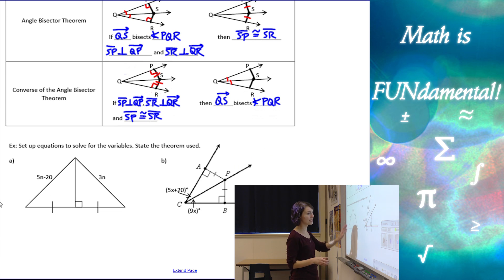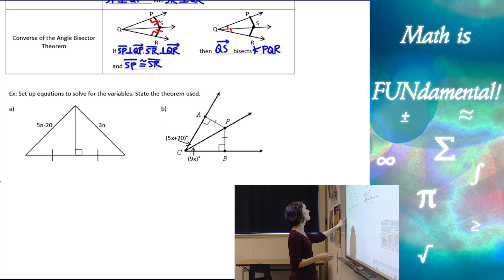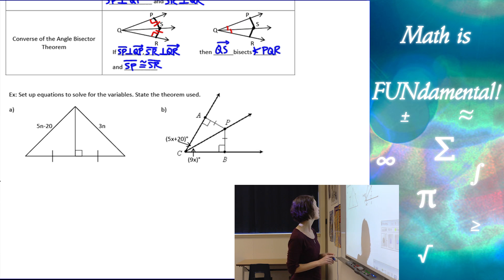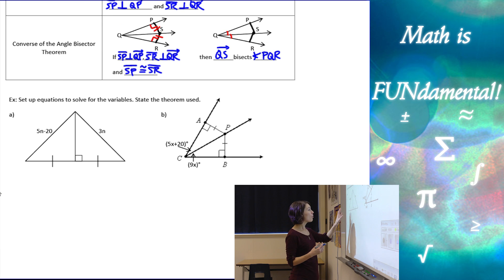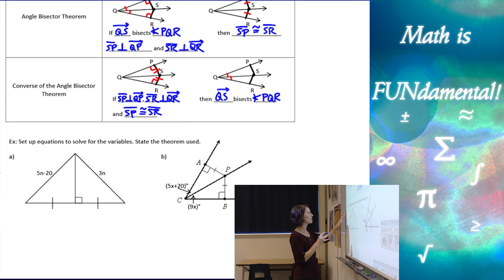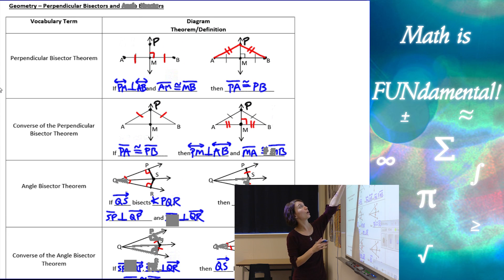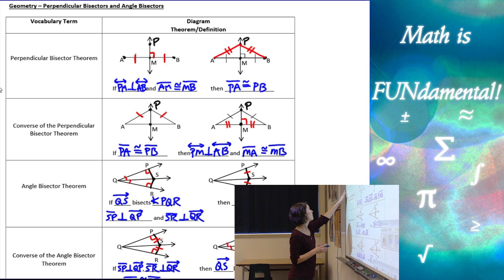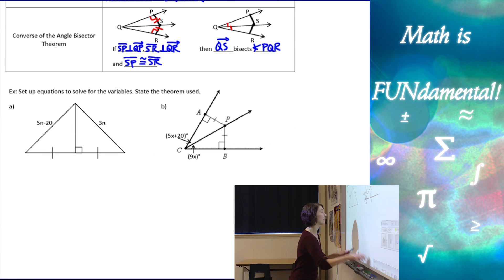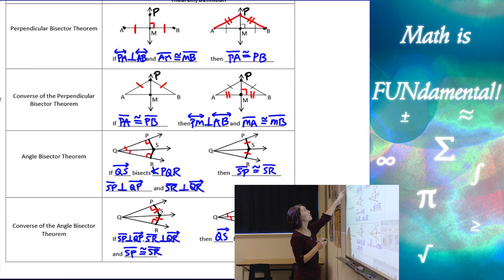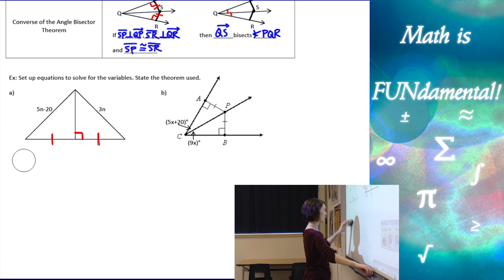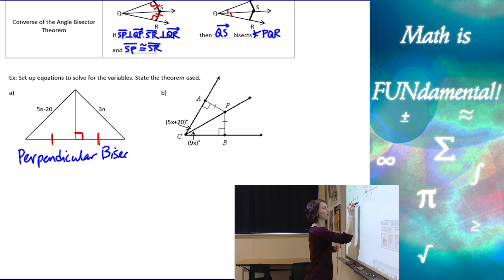Let's look at a couple of examples on how to use these theorems. It says: set up the equations to solve for the variables and state the theorem we used. Looking at the picture, we want to see which given information our diagram matches. We're given perpendicular lines and AM congruent to MB — that matches the perpendicular bisector theorem.